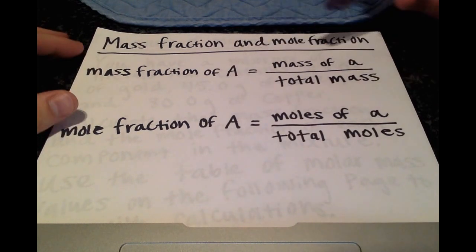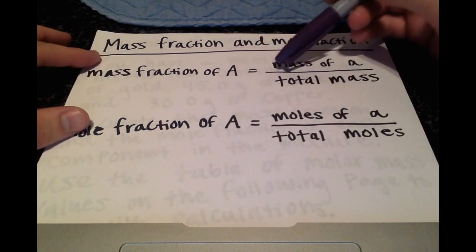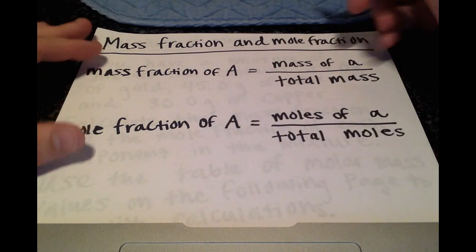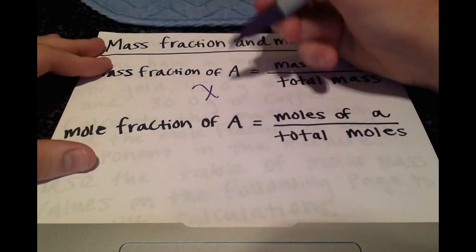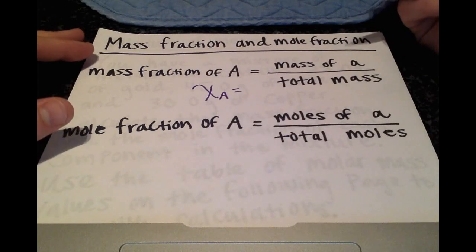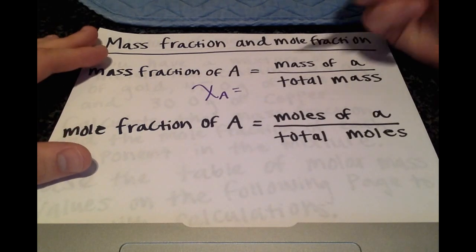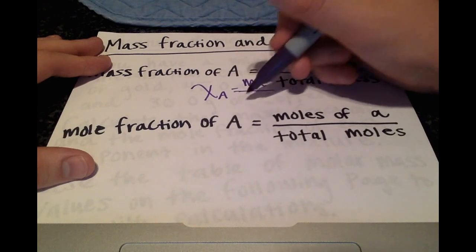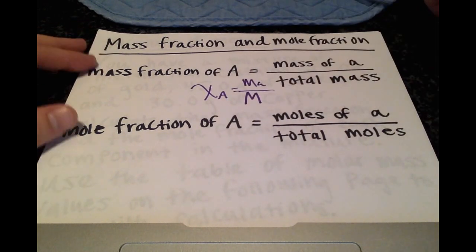So in words, the mass fraction of A is the mass of A over the total mass. The abbreviation is X sub A. And usually for this part, it's kind of a personal preference thing. I usually write M sub A and then capital M for the total mass.